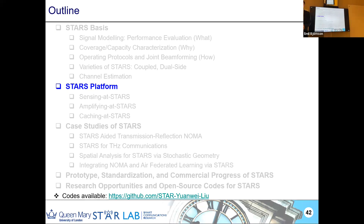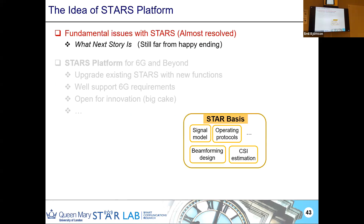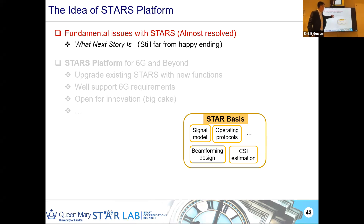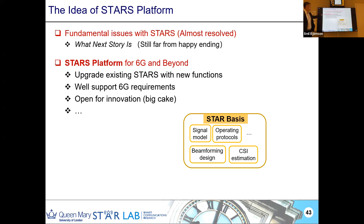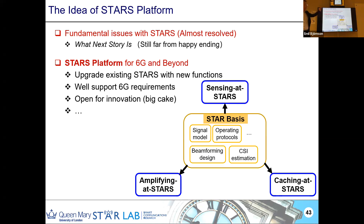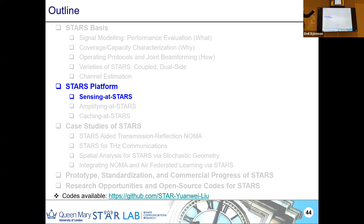Now let's talk about the STARS platform — my vision. We've almost solved the fundamental issues: signal model, operating protocols, beamforming design, channel estimation. The next step is to make a STARS platform for 6G and beyond, upgrading STARS with functions to support 6G requirements. We want to do sensing-STARS, amplifying-STARS, caching-STARS, and in the future computing-STARS, localization-STARS, and other functional STARS — like an Apple or Android platform where people can do many things.